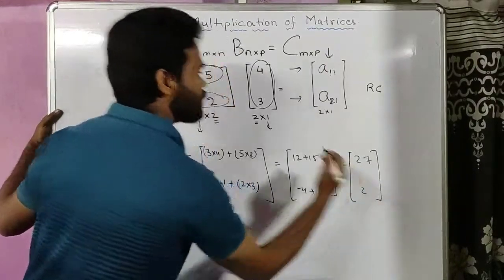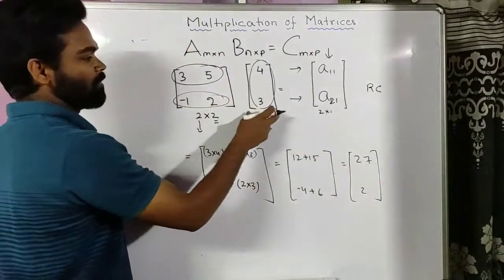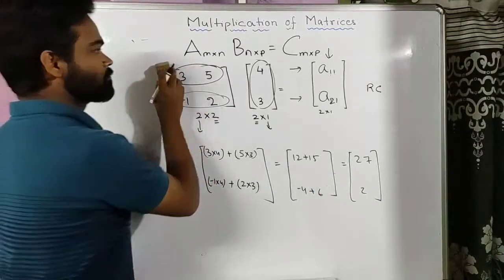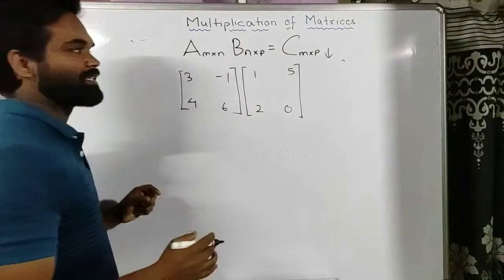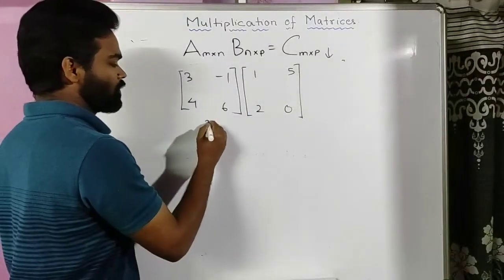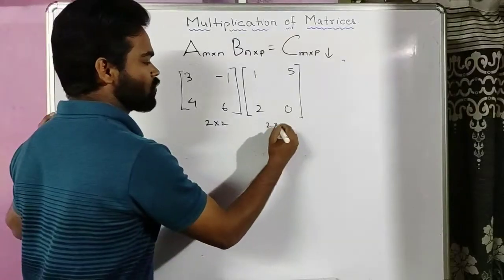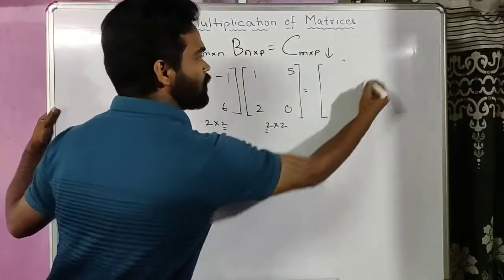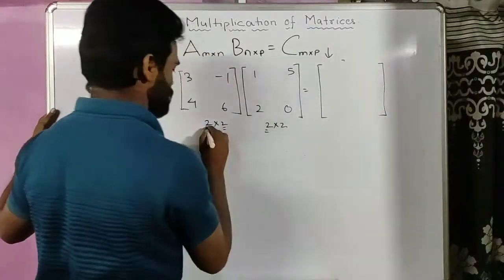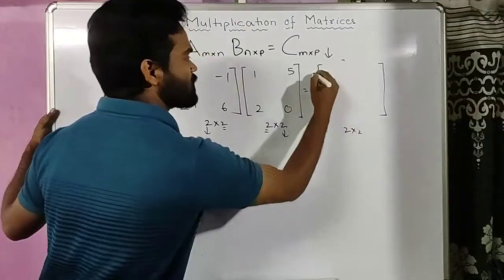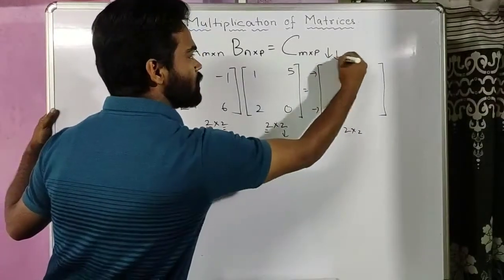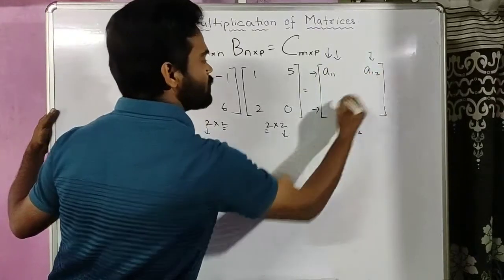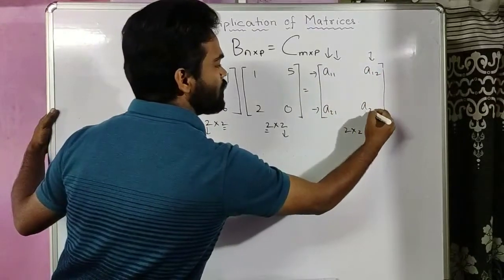So A multiplied by B gives you C = [27; 2]. Now let's take one more example. The order of this matrix is 2×2 and the order of the second is also 2×2, so they are compatible. The resultant matrix will be of order 2×2, meaning it will have two rows and two columns, with elements a₁₁, a₁₂, a₂₁, and a₂₂.